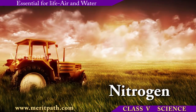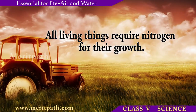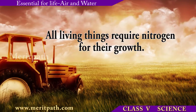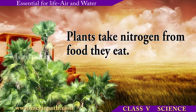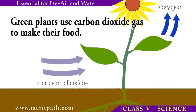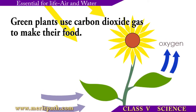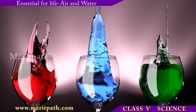Nitrogen is a naturally occurring element that is essential for growth and reproduction in both plants and animals. All living things require nitrogen for their growth. Carbon dioxide is a gas which is vital to life on earth. Green plants use carbon dioxide to make their food. It is even used commercially in fire extinguishers and to carbonate beverages.